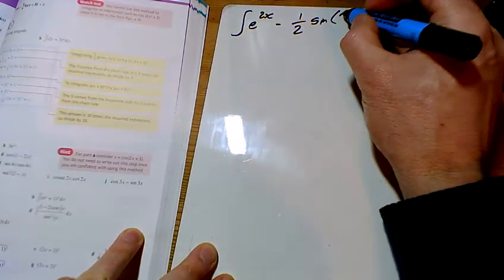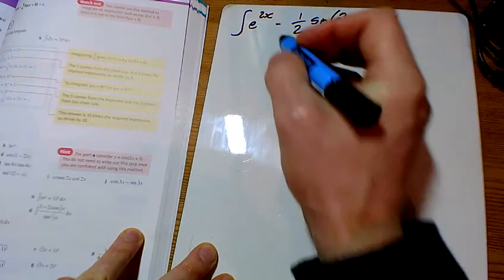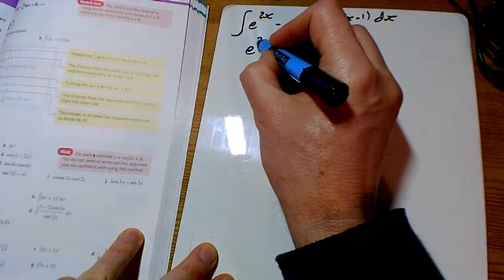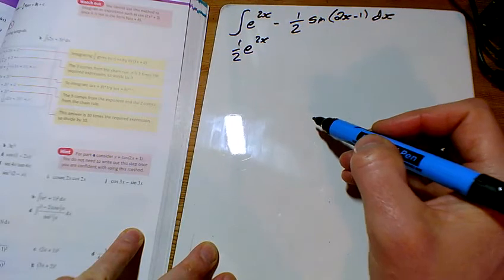Now question 2. A few more of these to go then. So the e to the x stays as the e to the x. We'll divide by the number of x's. I've got a half coming outside there.